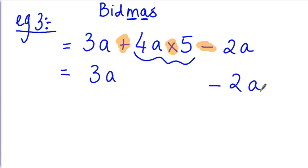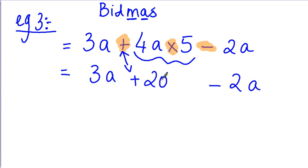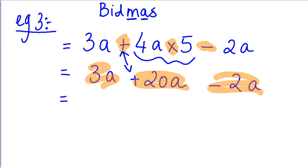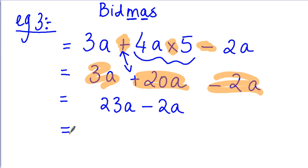I'll work out what 4A times 5 equals. Multiply the numbers first: 4 times 5 is 20, so I write plus 20. Then multiply with the letter, giving plus 20A. Now I collect the like terms: 3A, 20A, and minus 2A are all like terms. Following BIDMAS, I do the addition first: 3A plus 20A gives 23A. Then I take away the 2A, and 23A take away 2A equals 21A. That's my answer.